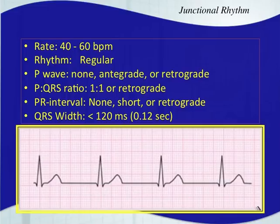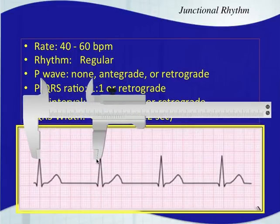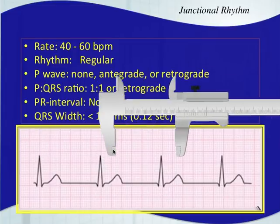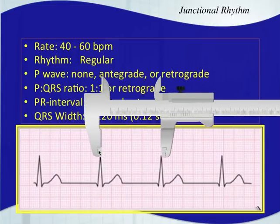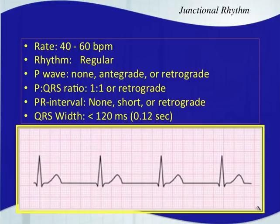The rhythm should be regular. You'd take out your calipers and check your R-to-R interval — it should be very regular, just like a sinus rhythm. That regularity helps us differentiate a junctional rhythm from something like atrial fibrillation.